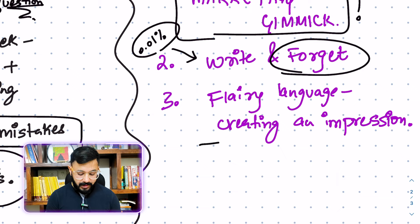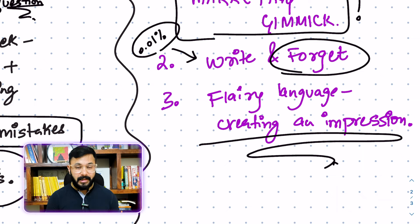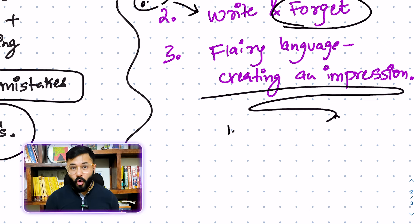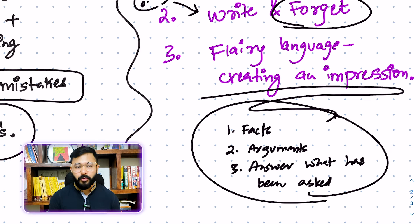Point number three and the last point here is flashy language to create an impression on the examiner. Which is wrong. You are not there writing in the exam hall to create an impression on the examiner. You are writing in the exam hall to come out with the right facts, to come out with the right arguments and finally to answer what has been asked. You are not there to impress anyone, you are there to create or to write what is truth, what is honest, what is a fact, what is an argument and to answer specifically what has been asked. Nothing else, nothing more, nothing less.